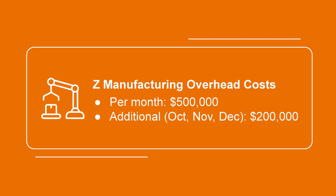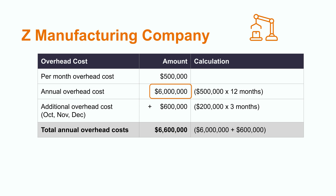Let's take an example. Assume that Z is a manufacturing company. It has an additional $200,000 in manufacturing overhead cost, which is the furnace cost, in each of the months of October, November, and December, due to the fact that it is some of the coldest months of the season. The overhead cost for the rest of the nine months is $500,000 each month. The annual manufacturing overhead cost is $6,000,000 — times 12 — plus $600,000, which is an additional $200,000 per month for the three months, for a total manufacturing overhead cost of $6,600,000.